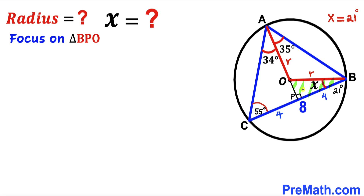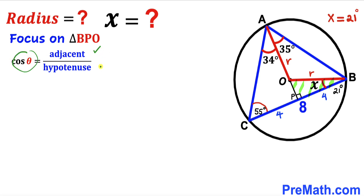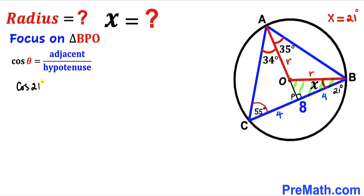Now let's focus on right triangle BPO and recall the trigonometric ratio: cosine of angle theta equals adjacent divided by hypotenuse. In right triangle BPO, our angle theta is 21 degrees, the adjacent side is 4 units, and the hypotenuse is radius r. So we get: cosine of 21 degrees = 4 divided by r.